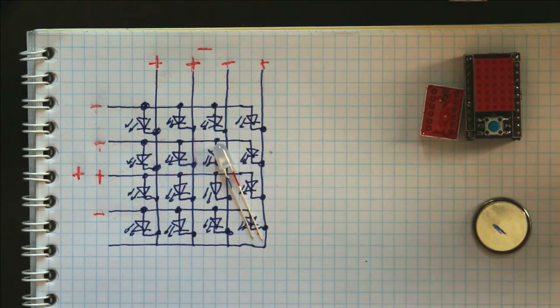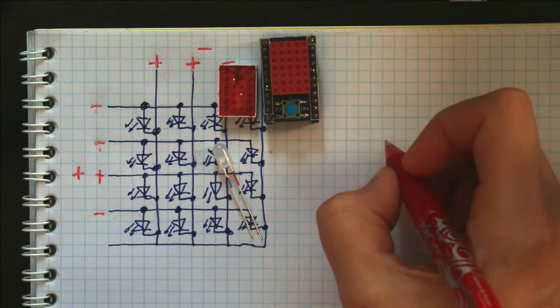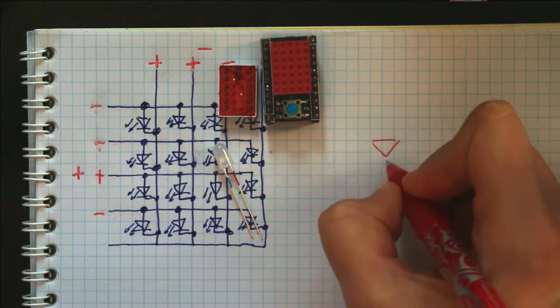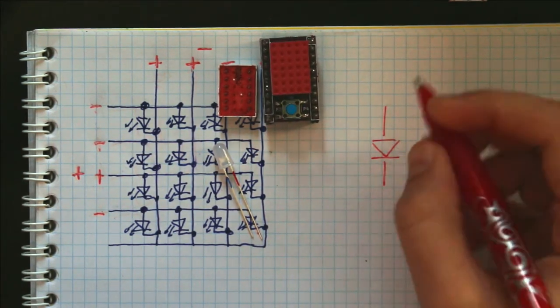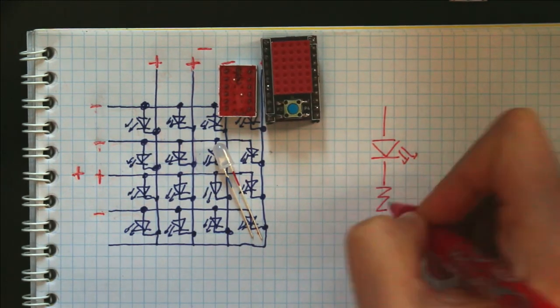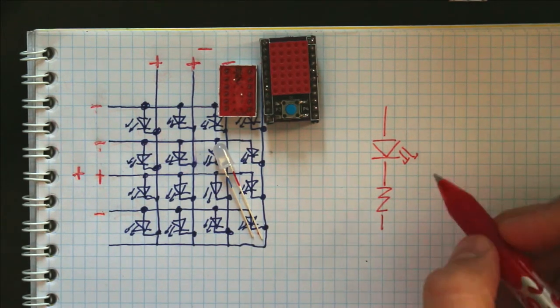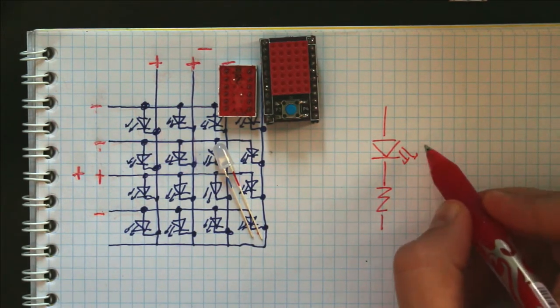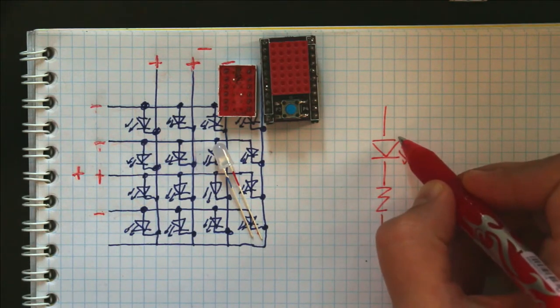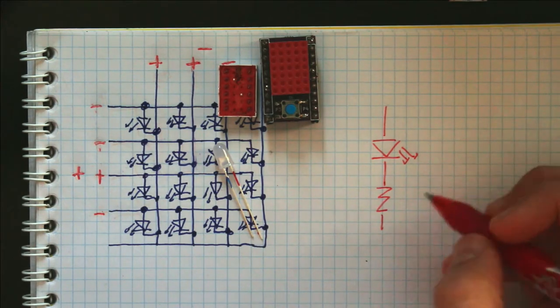So in order to prevent that, frequently you'll see an LED in line with a resistor. So your LED will have either a resistor before or a resistor after. It doesn't matter. And that makes it so that the voltage drop across the LED is the correct amount for it to operate in a happy state.